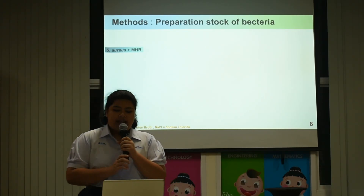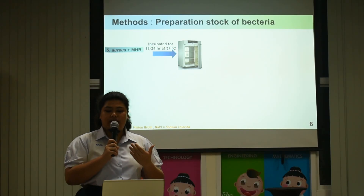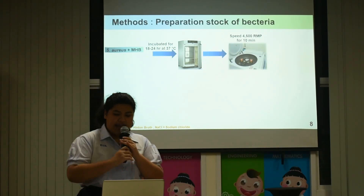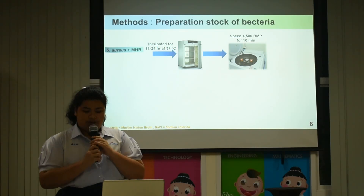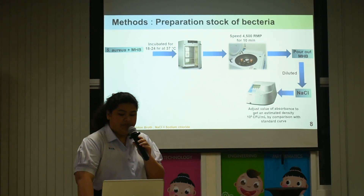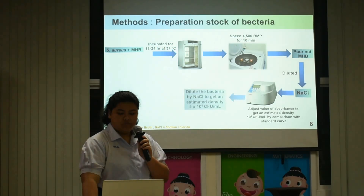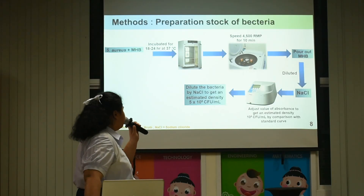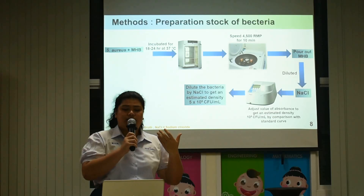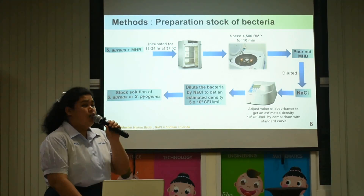The second method is preparation of bacteria stock. First, mix S. Aureus and MHB (Mueller-Hinton Broth) together and incubate at 37 degrees Celsius for 18 to 24 hours. Separate S. Aureus from MHB by centrifuge and pour out the MHB. Dilute with sodium chloride and measure absorbance by comparison with a standard curve. Dilute the bacteria to an estimated density of 5×10⁶ CFU/mL to obtain the stock solution of S. Aureus. Use the same method for S. Pyogenes.